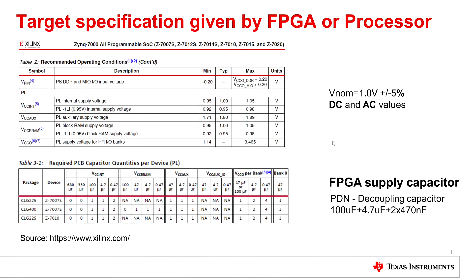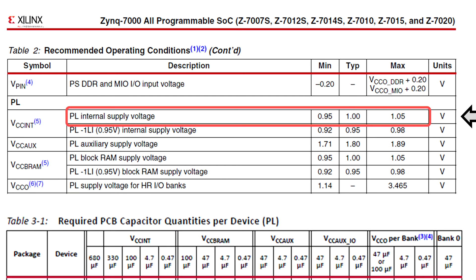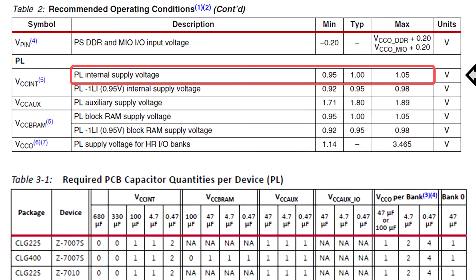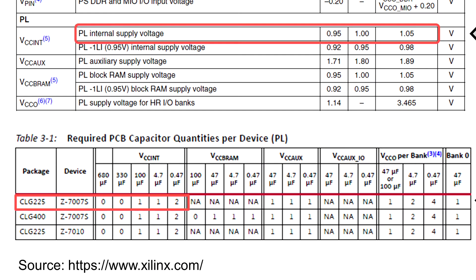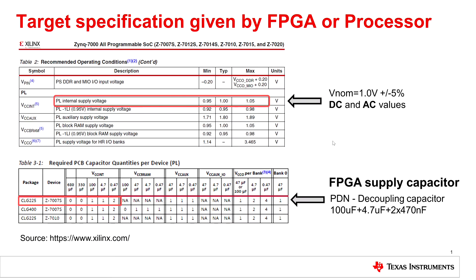Here we have the target specification of a Xilinx FPGA. The programmable logic is specified to 1V ±5% and the recommended bypass and decoupling capacitor is 100µF plus some high-frequency decoupling caps. For us the important spec item to meet is the 1V ±5% for any DC variation and AC load transient changes.